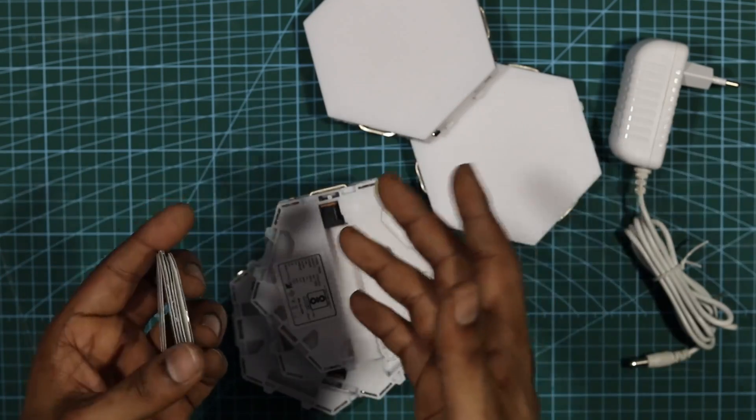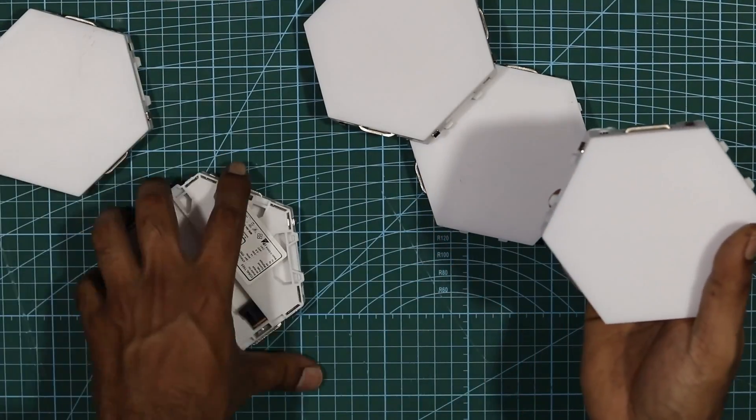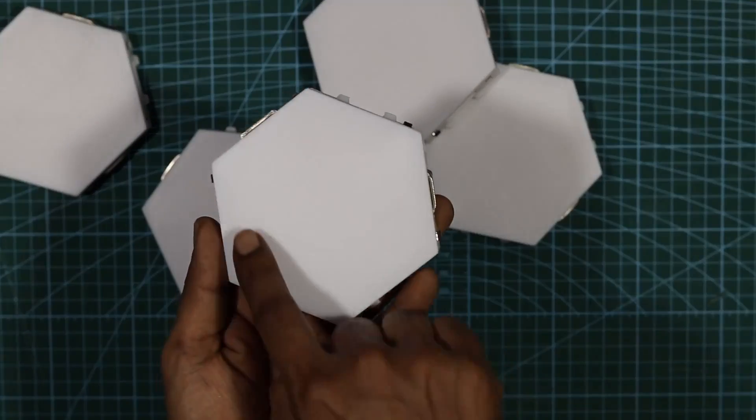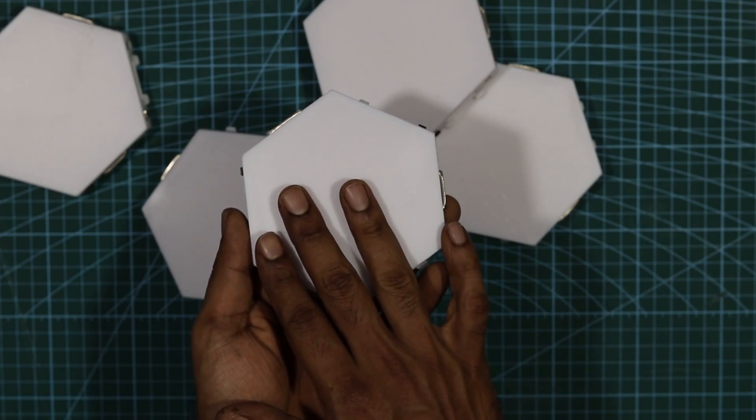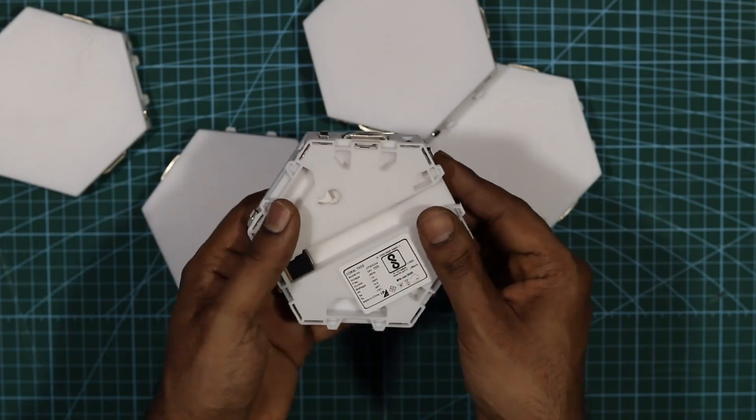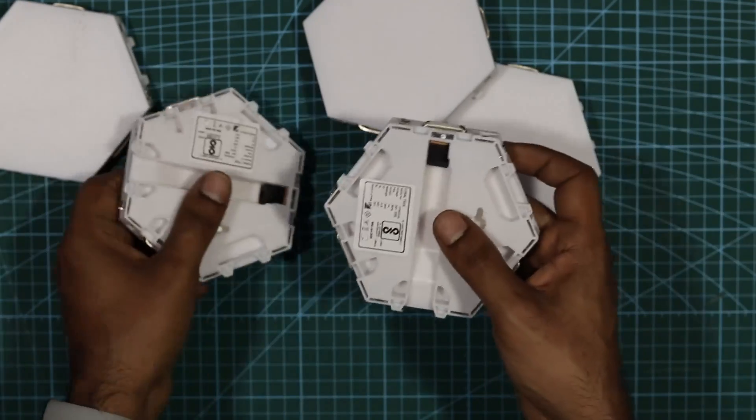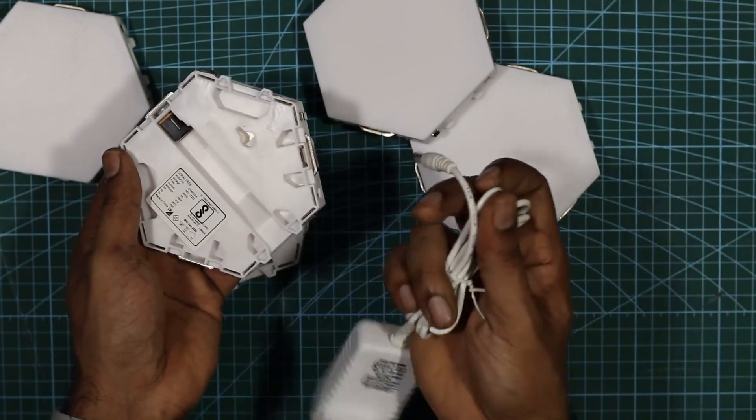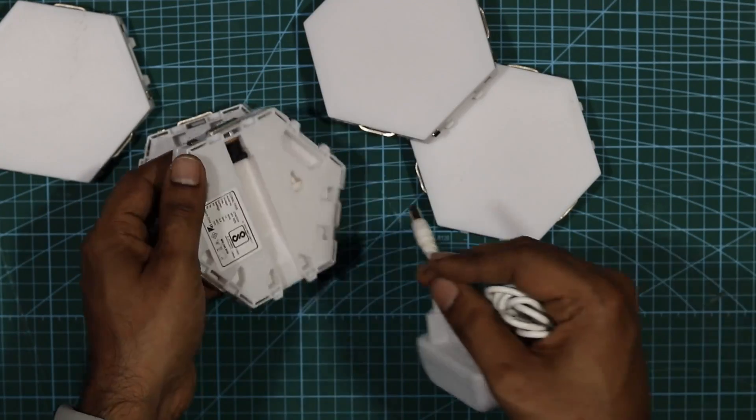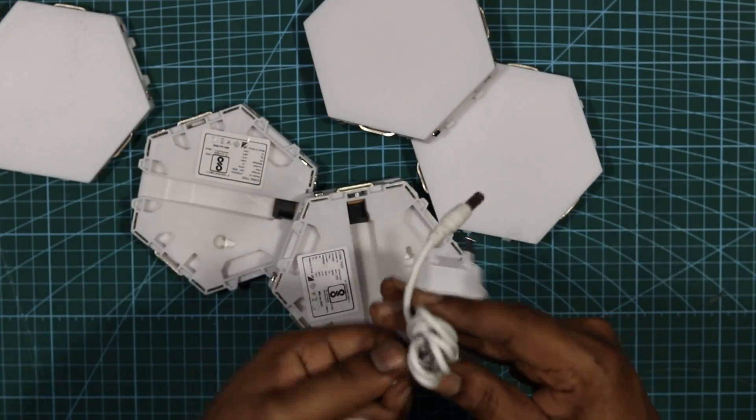So you have the sticky tapes for each module. Let's keep that aside. So this is the module that I was talking about. And the front part is where the entire part glows. That's the white part here. And at the bottom, you have the magnetic connections and you have the barrel jacks. So each light has their own barrel jack. It's not necessary that only one module would power it. You can connect the adapter to any module.